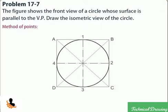Draw the diagonals of the square cutting the circle in points 5, 6, 7, and 8.